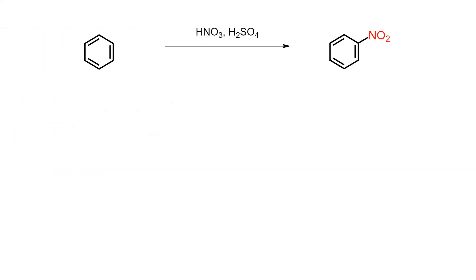The treatment of benzene with nitric acid and sulfuric acid delivers nitrobenzene as the product of stepwise electrophilic aromatic substitution. A nitronium ion is formed as the electrophile, which is trapped to produce a stabilized sigma complex. Rapid loss of a proton then provides the aromatic product.